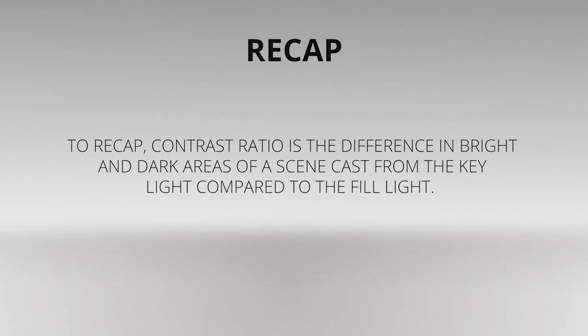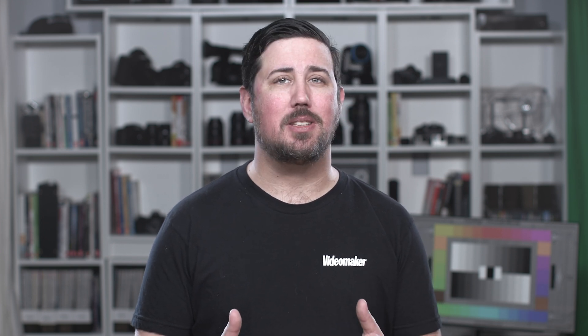To recap, contrast ratio is the difference in the bright and dark areas of a scene, cast from the key light compared to the fill light. To measure this ratio, one will use a light meter and the ratio will be calculated in f-stops. Each stop moving up or down the range will create a doubling or halving of light. The ratio will be expressed in numbers like 8 to 1, 4 to 1, or 2 to 1. This process of measuring the light can help create consistency shot to shot throughout a project, as well as help make the crew setup more fluid during downtime. Ultimately, using the right contrast ratio helps you add to the drama or lighten the mood as needed in the script.